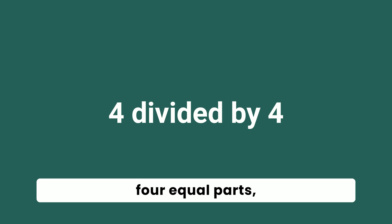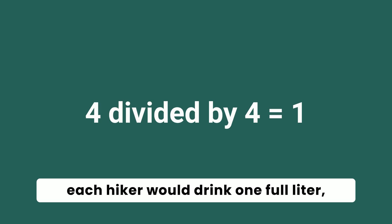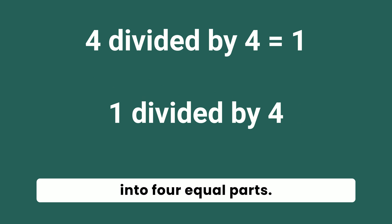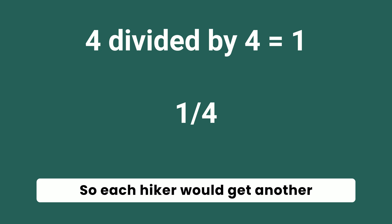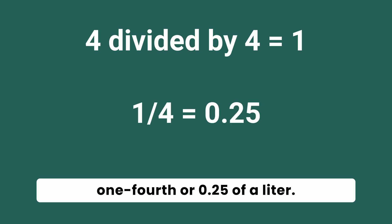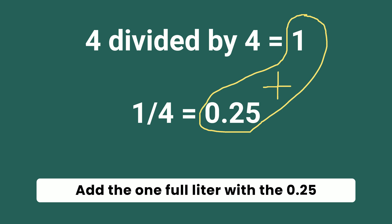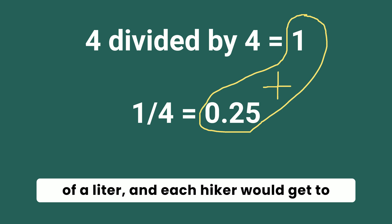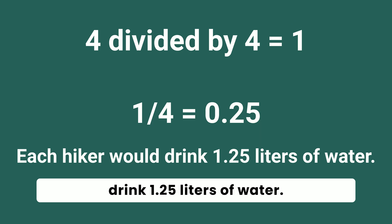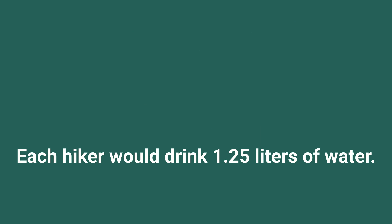If you split just four liters into four equal parts, each hiker would drink one full liter. And then we can split the fifth liter into four equal parts, so each hiker would get another one-fourth, or 25 hundredths of a liter. Add the one full liter with the 25 hundredths of a liter, and each hiker would get to drink one and 25 hundredths liters of water.